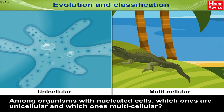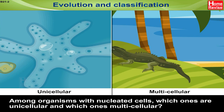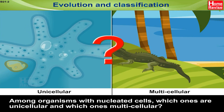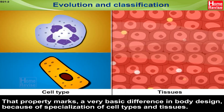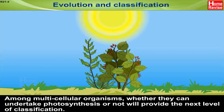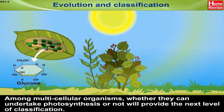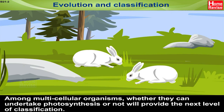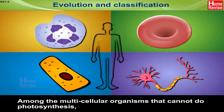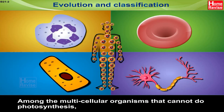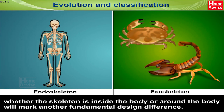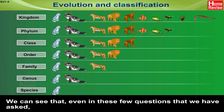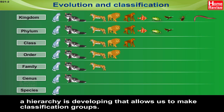Bacterial cells do not have a nucleus, while the cells of most other organisms do. Among organisms with nucleated cells, which ones are unicellular and which ones multicellular? That property marks a very basic difference in body design due to specialization of cell types and tissues. Among multicellular organisms, whether they can undertake photosynthesis will provide the next level of classification. Whether the skeleton is inside or around the body marks another fundamental design difference. In these few questions, a hierarchy is developing that allows us to make classification groups.